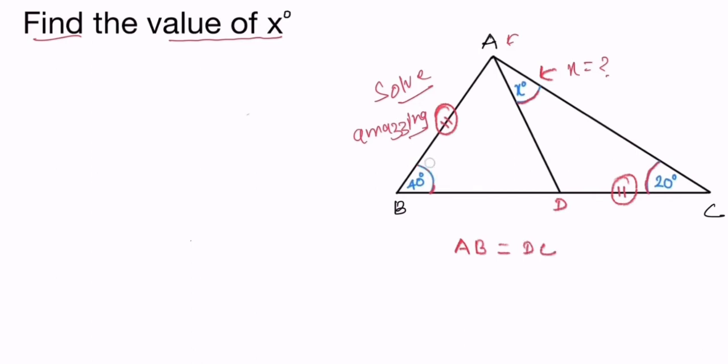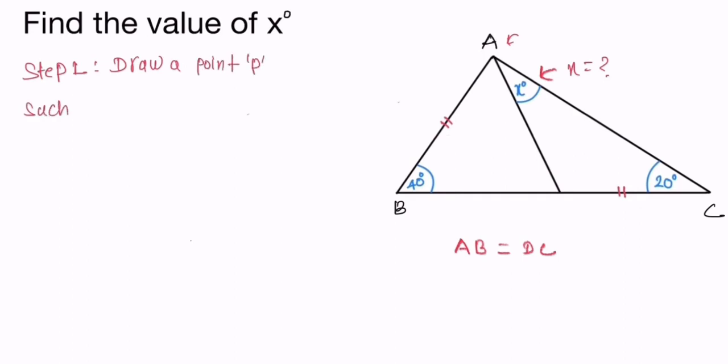Now what do we do? Step 1: Draw a point P such that we get a new angle, angle P equal to 20 degrees. Angle P is equal to angle C here.